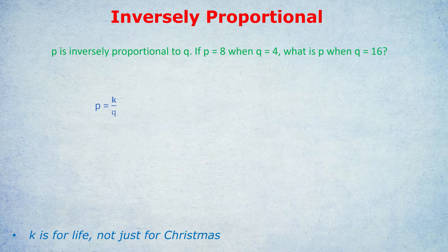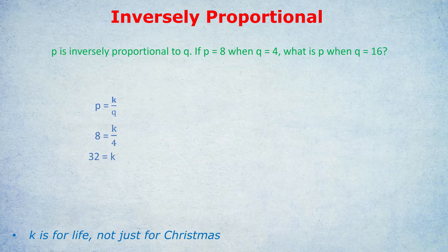They've given us two numbers. If P equals 8 when Q equals 4, what is P when Q equals 16? So we use the first two numbers, the pair of P equals 8 and Q equals 4, to work out K. Replace them in the equation, and you get 8 equals K over 4. Multiply both sides by 4, and you get 32 equals K. And I've rewritten that just for emphasis: K is for life, not just for Christmas. It is permanently 32 now.